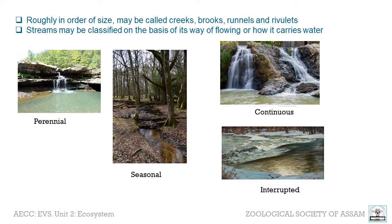Streams may be classified on the basis of how they carry water. Streams may be perennial or continuous because they flow all year long, while seasonal streams are only seen at certain times of year, usually in wet season or as a result of snow or ice melting. As shown in the figures, continuous streams flow without stopping until they reach an end point or another body of water, while interrupted streams may have different breaks or reaches depending on sustainability barriers or other factors.